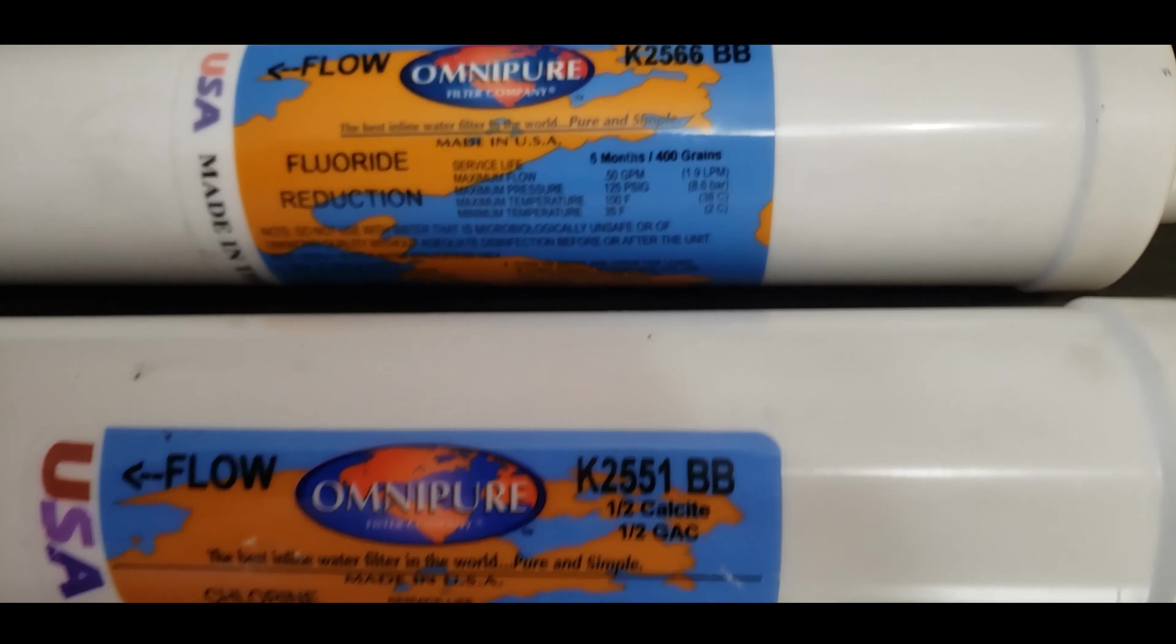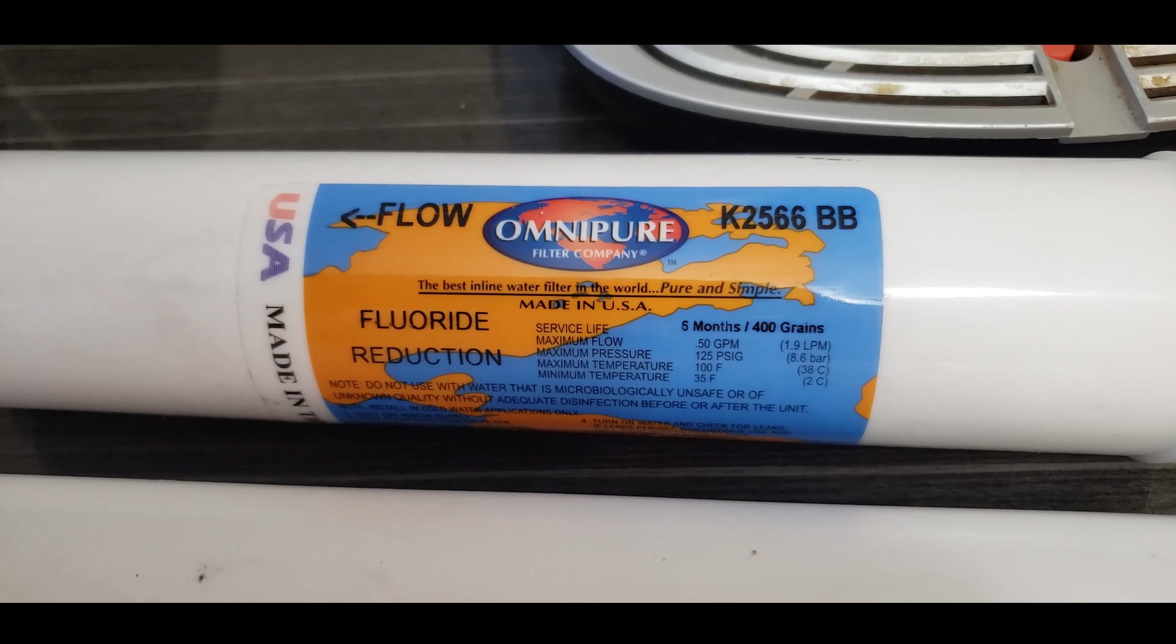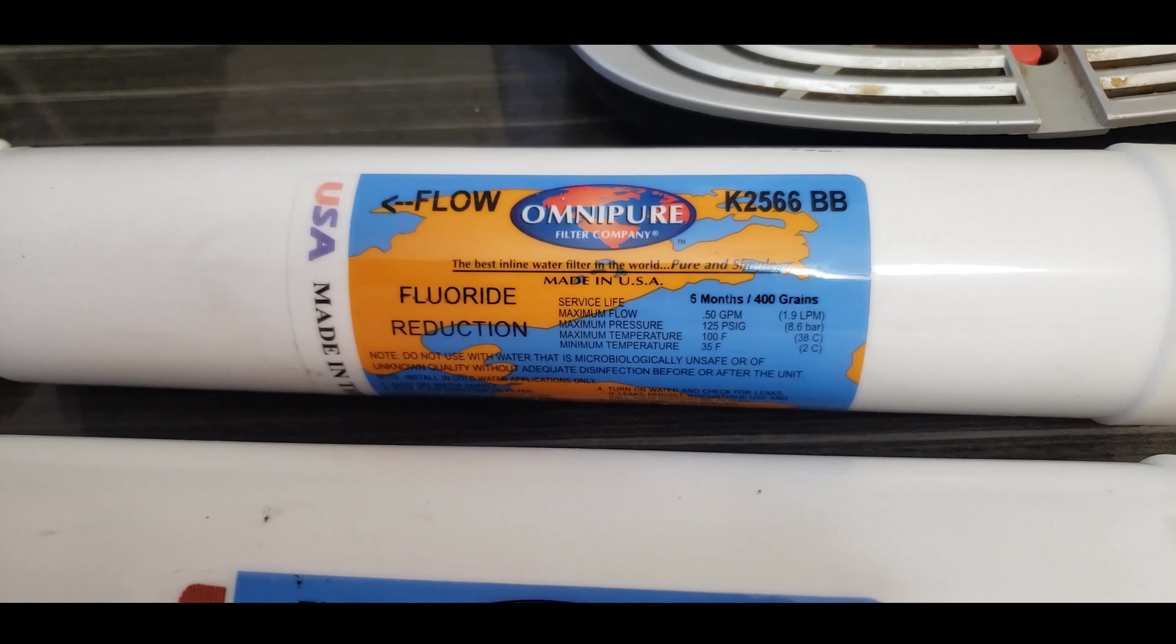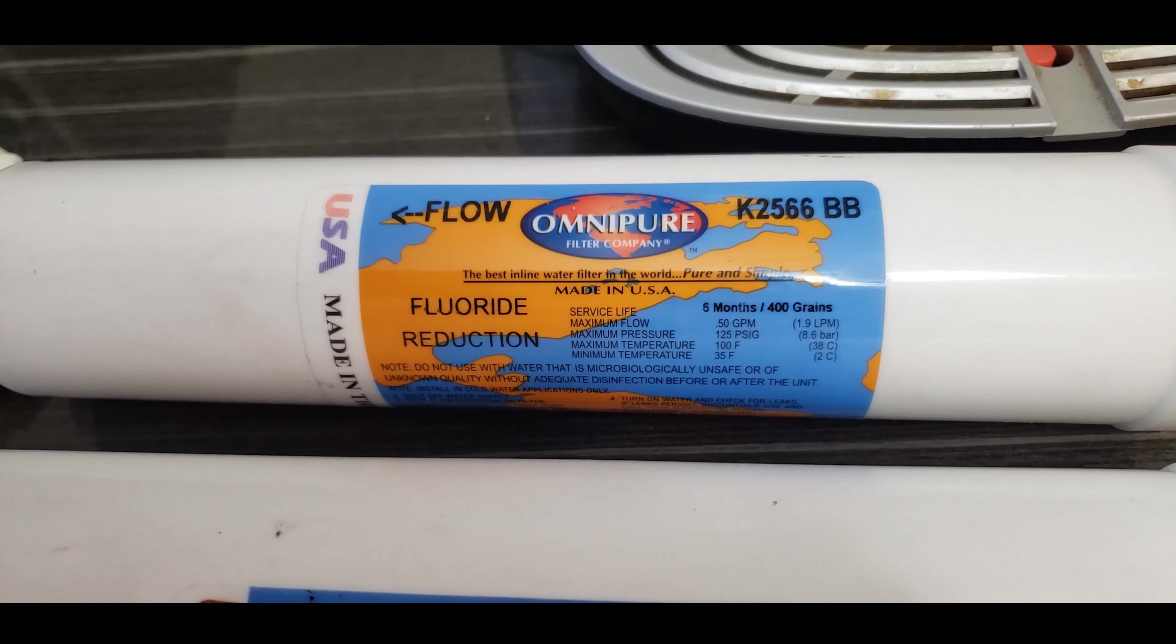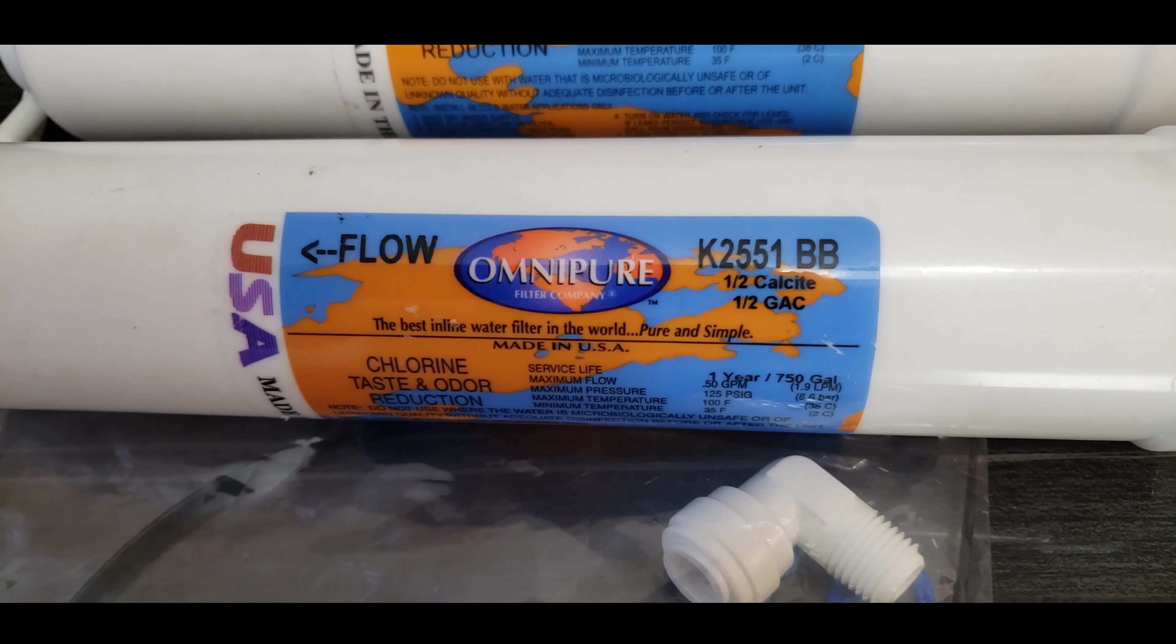Basically two of them. One is a fluoride reduction active alumina filter to remove added fluoride from your water. The other one is basically half calcite, half GAC.